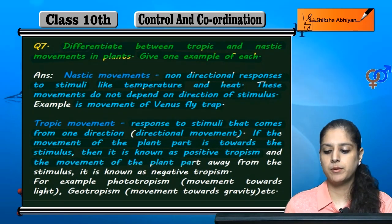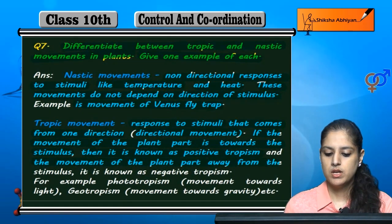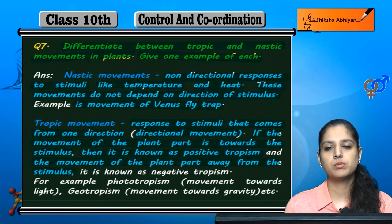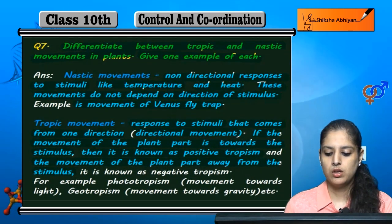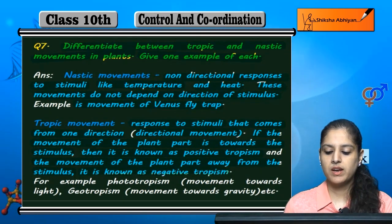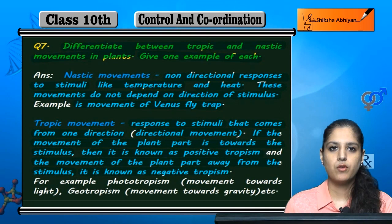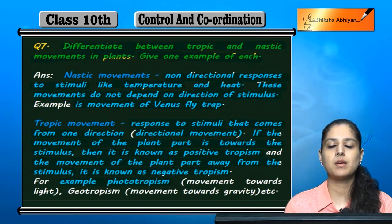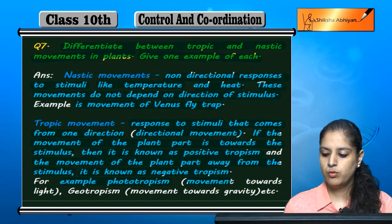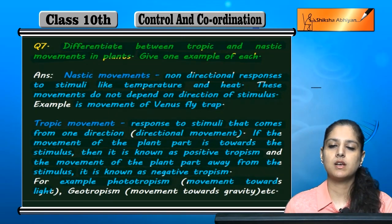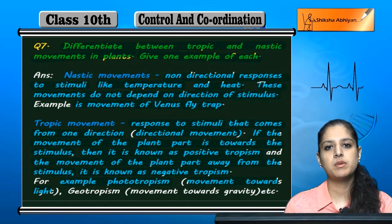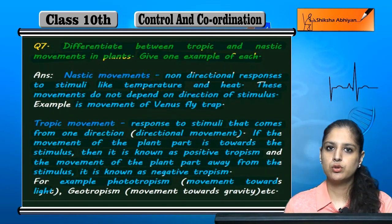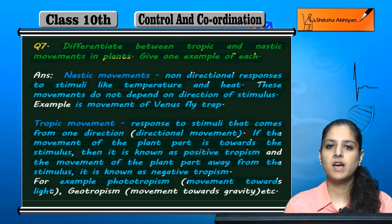If the movement of the plant is in the opposite direction, away from the stimulus, it is negative tropism. For example, phototropism means movement towards light or sunlight. If a sunflower moves towards wherever there is sunlight, that is phototropism, and it is directional.